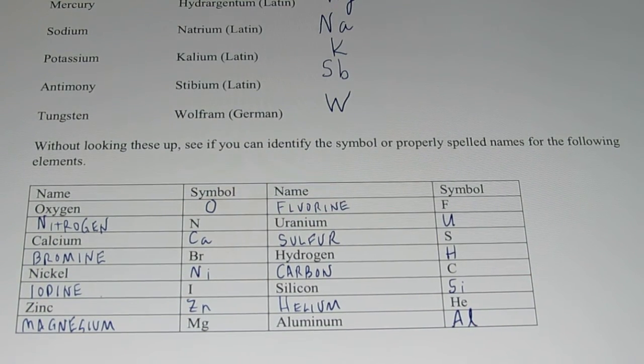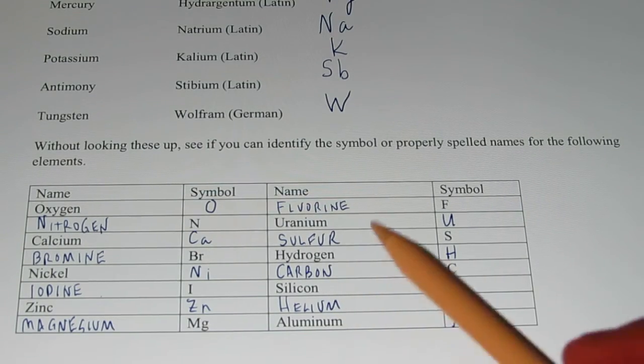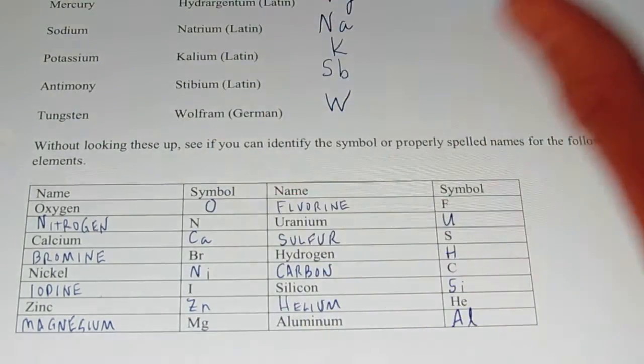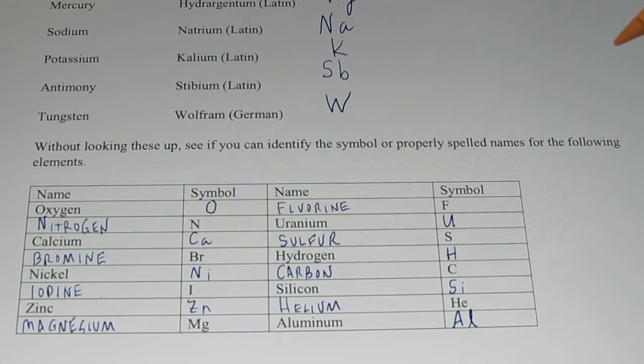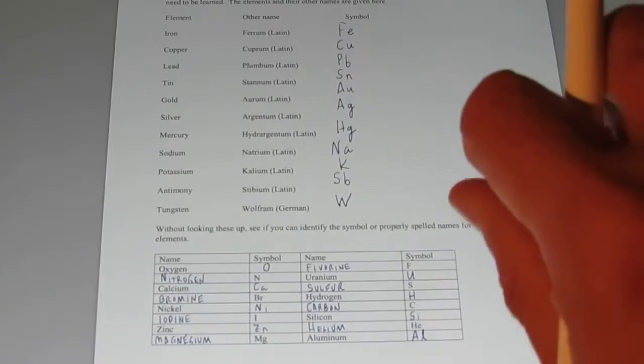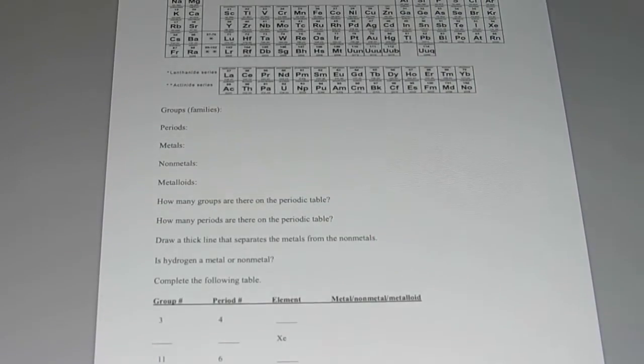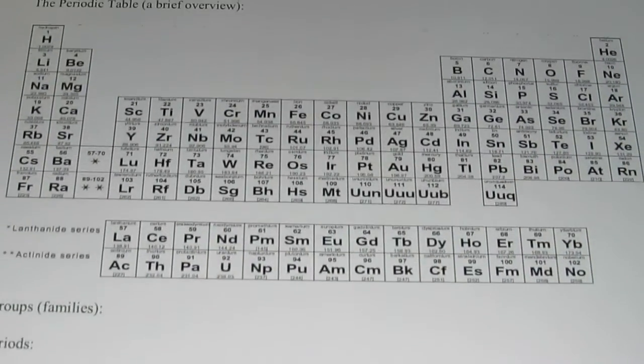So how did you do? Yeah, you probably surprised yourself. You actually know how to spell most of these already, and you already know most of their symbols. So it might take a little bit of studying on your part to learn those other elements that are listed at the beginning of your manual. Alright, let's go on to the next page here and take a look at the periodic table. And I'm just going to give you a very brief overview of the periodic table today.